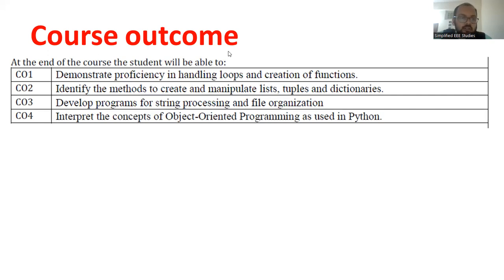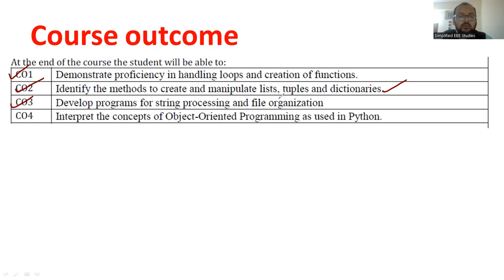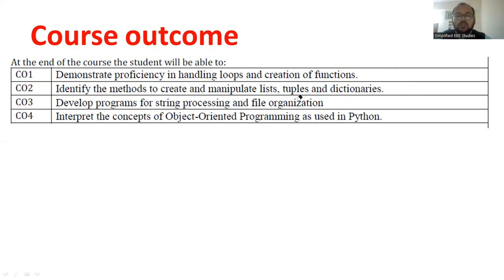At the end of the course, you will be able to understand the fundamentals of Python, how to handle loops, and the creation of functions — that is the first course outcome. The second course outcome is to identify the methods to create and manipulate lists, tuples, and dictionaries. The third course outcome is to develop programs for string processing and file organization. The fourth course outcome is to understand the basics of OOPs — object-oriented programming.